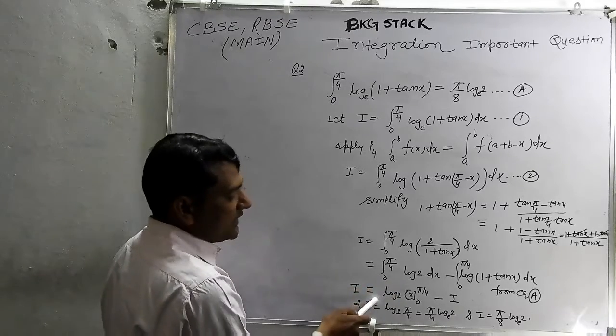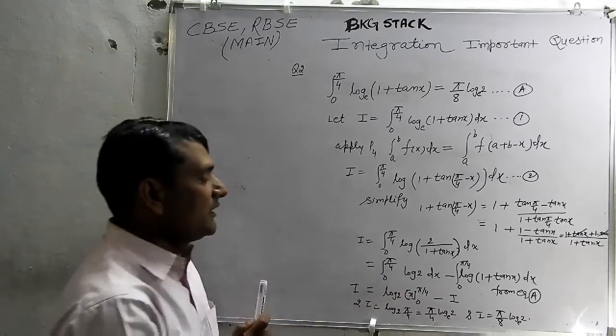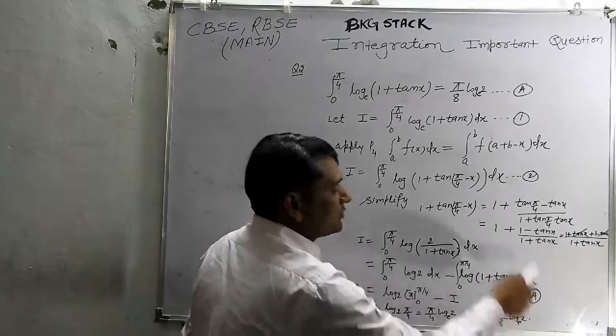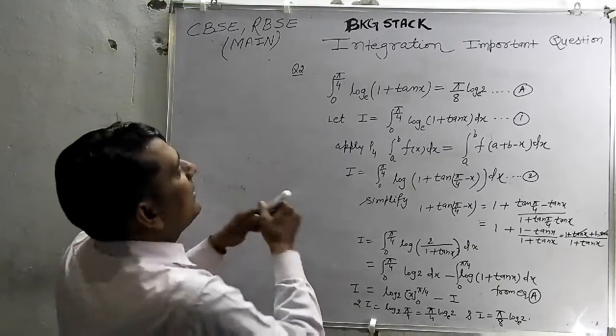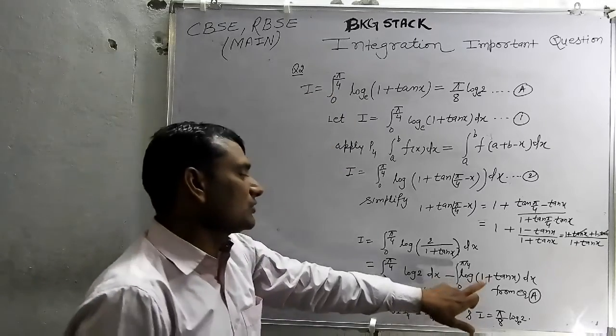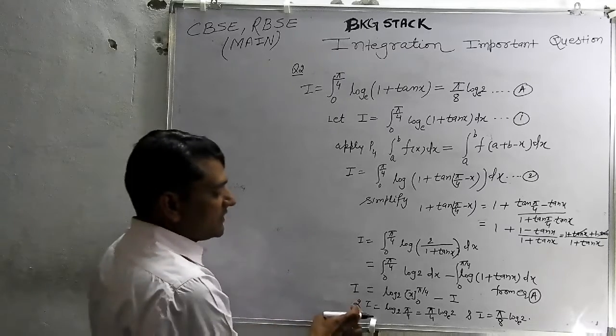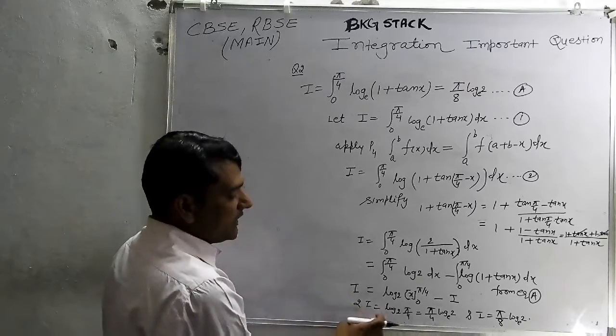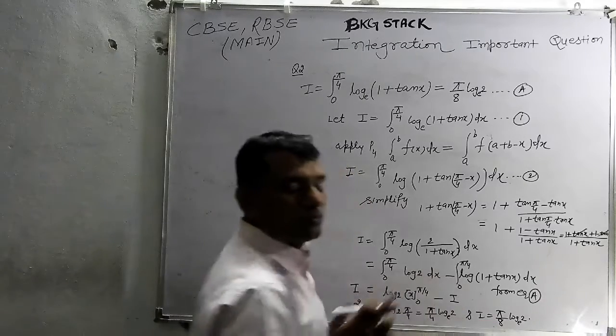This is log 2 is a constant and differences of integration of 1 that is x 0 to pi by 4 limit minus this is our question which is capital A that is equivalent to the i. So, this is substitute here i. Now, both this i is to be taken into the right side that the sign of i is converted and it becomes 2i that is equivalent to the log 2 pi by 4. So, i equal pi by 8 log 2.